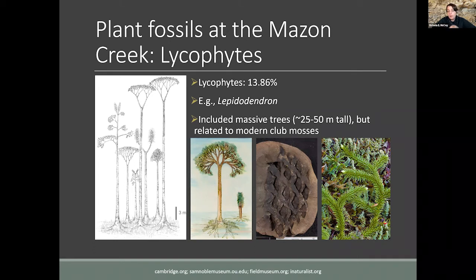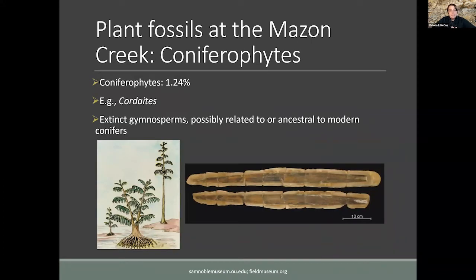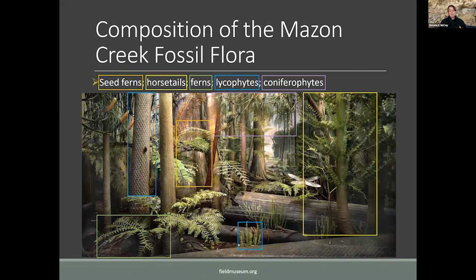Then, with a real decrease in abundance, come the coniferophytes, like the extinct swamp gymnosperm Cordaites. Coniferophytes are extinct gymnosperms possibly related to or ancestral to modern conifers. Cordaites was a large tree about 30 meters tall with very long strap-like leaves and adventitious roots that helped support it. If we look at the composition of the Maison Creek fossil flora, we get a picture of an extremely diverse coal swamp flora. However, these are all transported in, jumbling together potentially all sorts of different local floral environments.